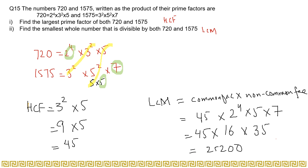So the smallest whole number that is divisible by both 720 and 1575 is 25200. That's how you solve this question — you just have to look for the hints given in the question, and in that way you will be able to judge whether you have to find the HCF or the LCM. Thank you so much for watching.